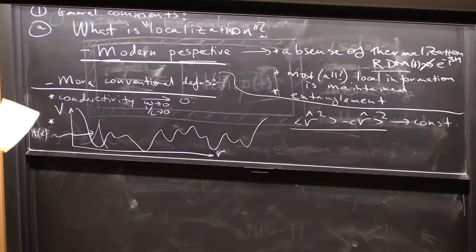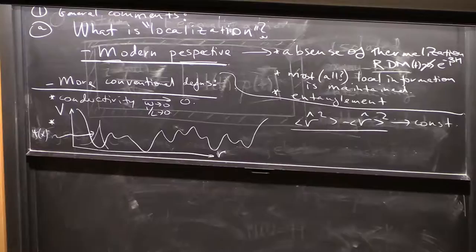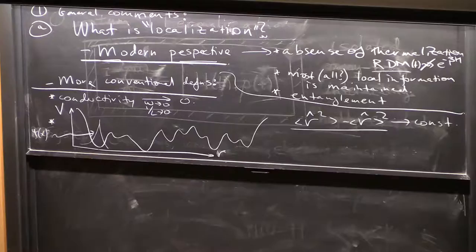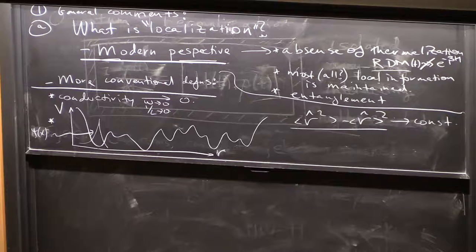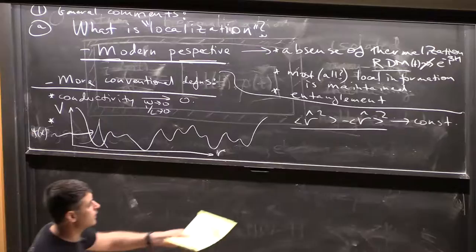The notion of localization, at least in most practical terms, is vanishing of the conductivity. But to get that, you have to take certain limits. At any finite frequency, in physics there are generally no strict zeros. You have to ask about limiting behavior.